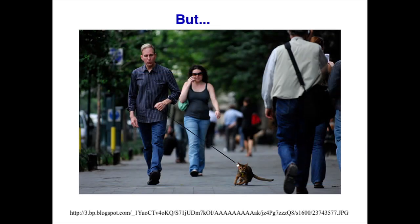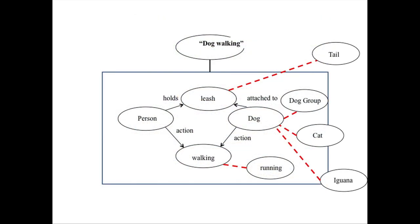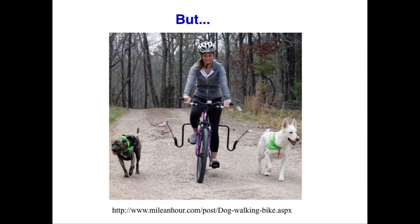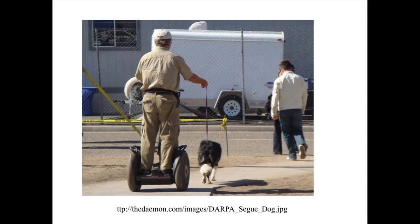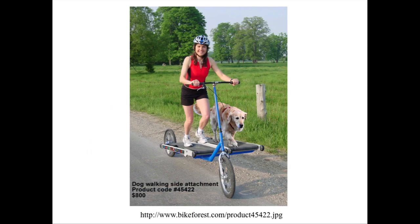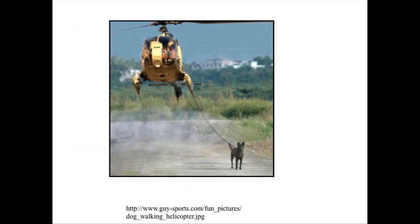Here's a picture of somebody walking a very unhappy-looking cat, walking an iguana with its tail taking the place of a leash. These are all in the same general category of this dog walking concept. And here's a different kind of dog walking — here's a dog that's riding a skateboard, somebody on a Segway. This is a device you can buy for $800, where you power your bike with a treadmill and you also walk your dog on the treadmill. So there's all kinds of dog walking.